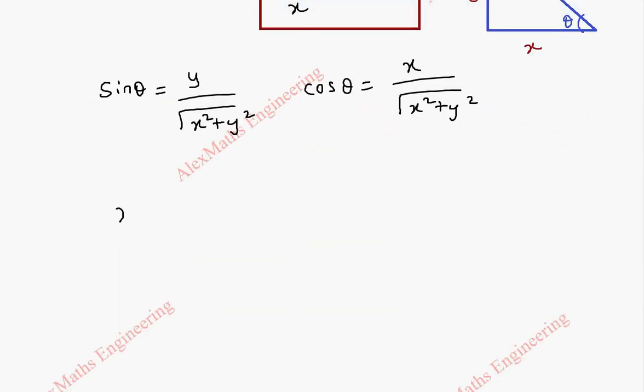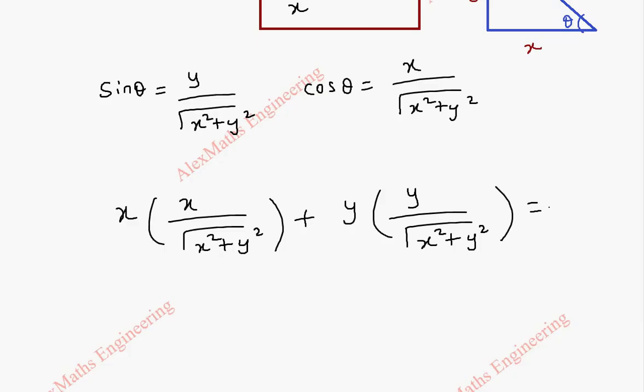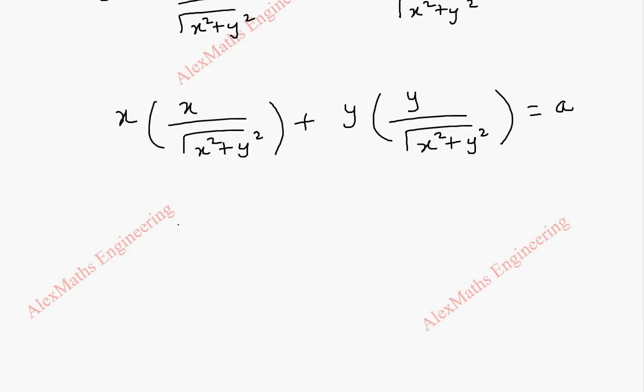So x cos θ into x over root of x squared plus y squared, plus y into sin θ, which is y over root of x squared plus y squared, equals a. Now this is x squared and y squared.